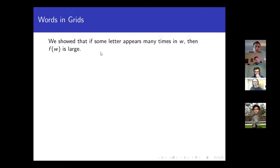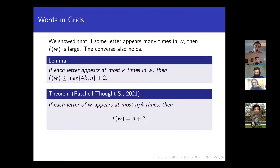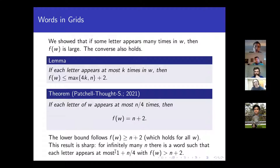We also showed earlier that if W has some letter appearing many times, then F(W) is going to be large — this was the popular letter construction. It turns out the converse is also true. More precisely, if W is such that each letter appears at most K times, then F(W) is at most 4K plus 2. This gives the following result: if you have a word W where each letter appears at most N over 4 times, then F(W) equals N plus 2 — just plug in K equals N over 4. The upper bound comes from here, and the lower bound comes from the general lower bound for all words. This basically says that if no letter in W appears sufficiently many times, you're going to be trivial. This result is best possible: there exist infinitely many N where some word has each letter appearing at most 1 plus N over 4 times, but you can do strictly better than trivial.